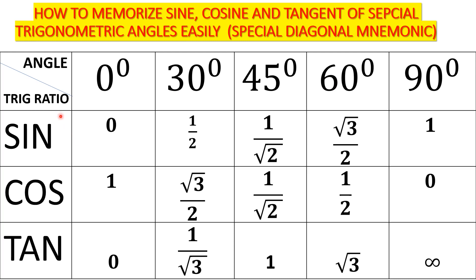All other trigonometric ratios are derived from the sine, cosine, and tangent. So the sine, cosine, and tangent are known as the fundamental trigonometric ratios. And these are the values for the sine, cosine, and tangent of 0, 30, 45, 60, and 90 degrees.